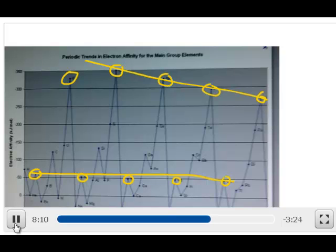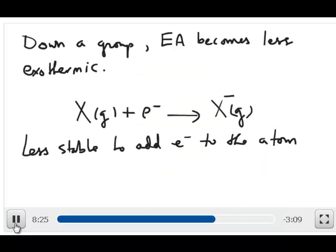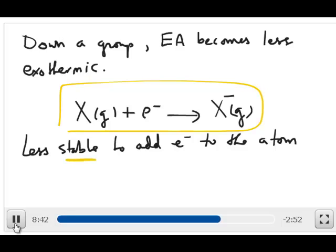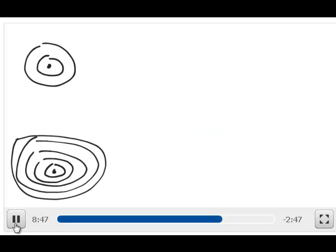Now, what does going down mean in this case? Well, remember, the axis is a little funny here. You have negative 350 and then negative 300, negative 250. So in other words, the electron affinity becomes less exothermic as you go down a group. It's less and less stable to add that electron to the atom. And the question again is why?